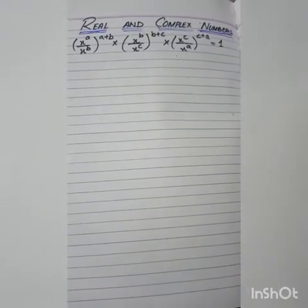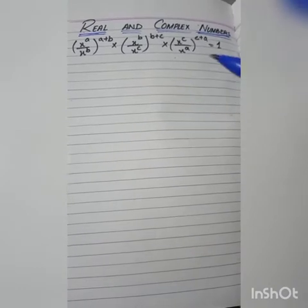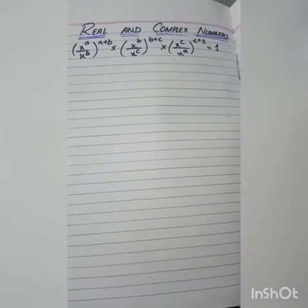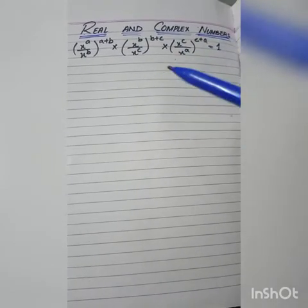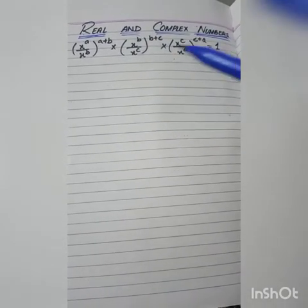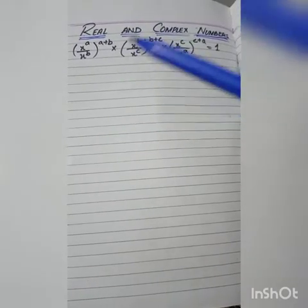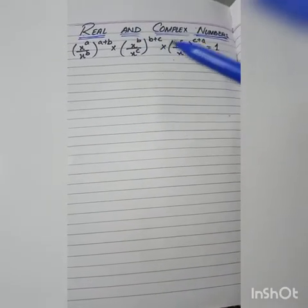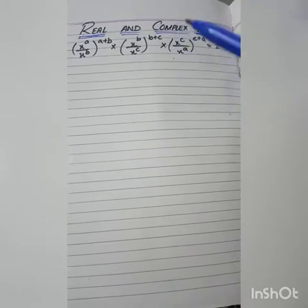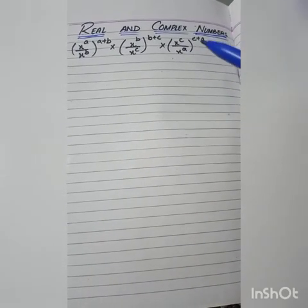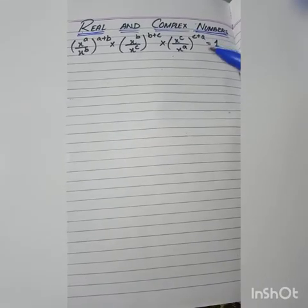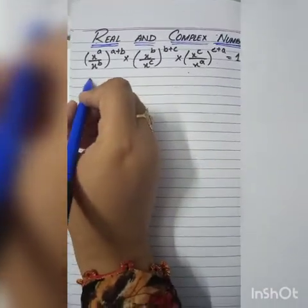Now we have to start our today's video. Today I just want to explain this question you can see on your screen. This is a question of real and complex numbers. The question is: (x^a / x^b)^(a+b) times (x^b / x^c)^(b+c) times (x^c / x^a)^(c+a) equals to one.